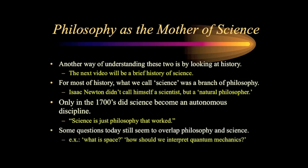Some questions today still seem to bridge the gap between philosophy and science. For example, when you think about a question like 'what is space?' or 'what is time?' — to an extent this is a philosophical question, and to an extent this is a scientific question. How should we interpret quantum mechanics? Should we go with the many worlds hypothesis or the Copenhagen interpretation? This is a scientific question, but when scientists are discussing it, they're really doing philosophy. Scientifically informed philosophers and philosophically inclined scientists are the ones who need to have this kind of conversation, and that can't really happen unless these two disciplines are in a position to mutually understand one another.